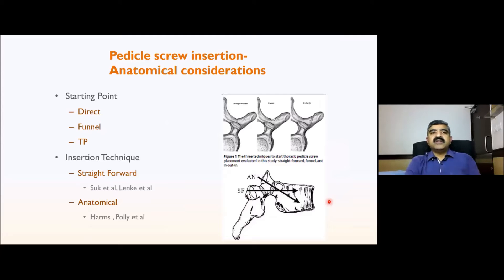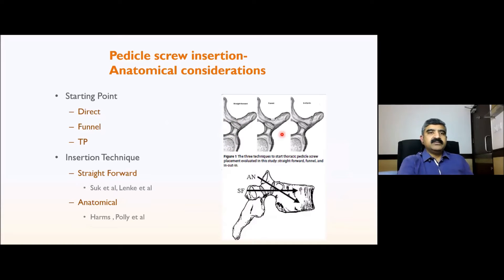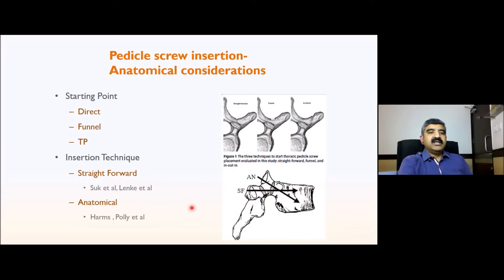For pedicle screw insertion we should know the starting points. There are three starting points: one is a direct starting point sitting on the pedicle; the second is a funnel technique where the transverse process meets the lamina; and the third is the transverse process technique where the starting point is in the middle of the transverse process. Insertion technique is of two types: the straightforward technique popularized by Lawrence Lenke, where you start in the middle of the pedicle and go directly inward; and the anatomical technique described by Harms, where you start at the superior end of the superior facet and go downward.